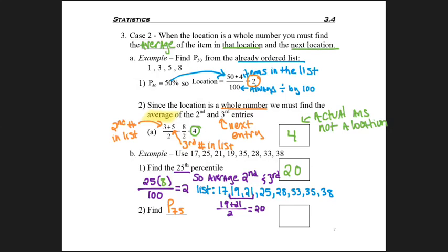Next problem, find P75. Maybe you should pause and see if you can find it on your own. First, I want to know where the location is. I take the 75, multiply by 8 because there's still 8 items in the list, and divide by 100 to get 6. I want the 6th entry, but it's a whole number. We don't bump up to the 7th. I need to average the 6th and the 7th entry. The 6th entry was 33. The next entry was 35. Divide that sum by 2, and I get my answer, 34.